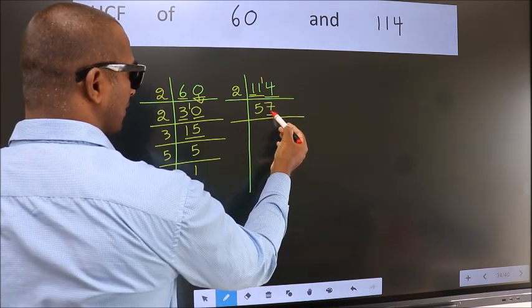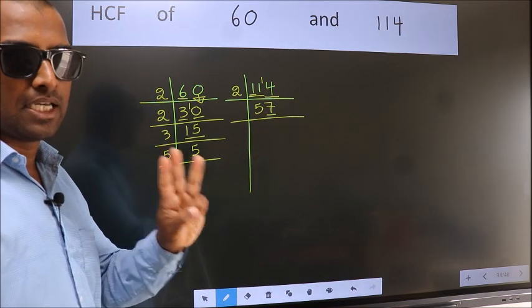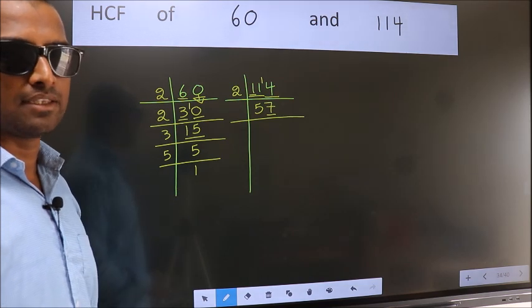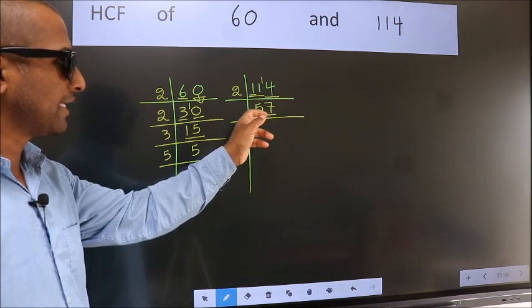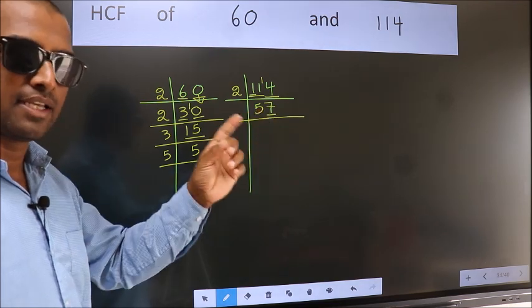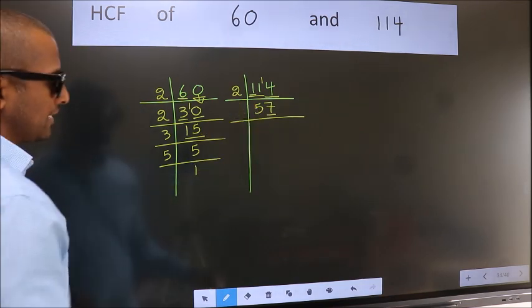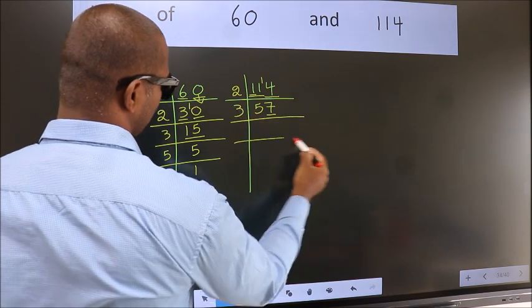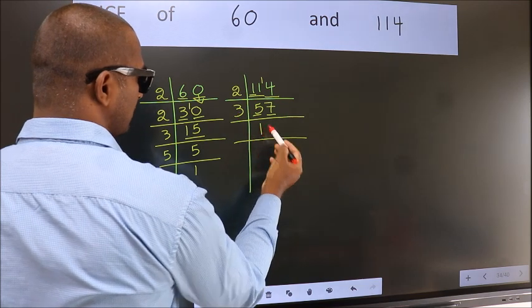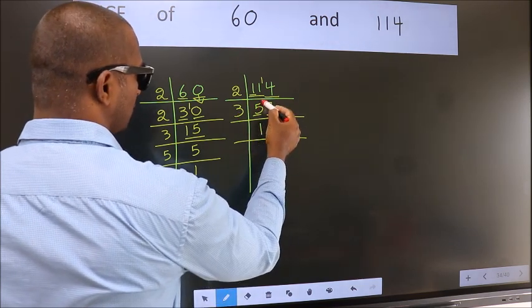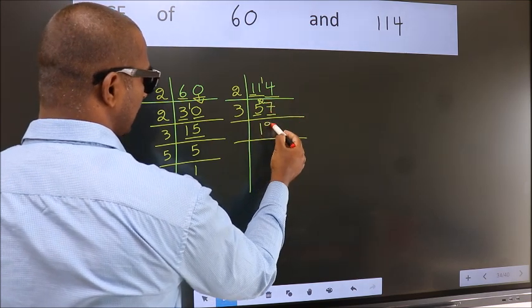Now last digit 7, not even, so this number is not divisible by 2. Next prime number, 3. To check divisibility by 3, for that we should add the digits. 5 plus 7, we get 12. Is 12 divisible by 3? Yes. So this number also divisible by 3. So take 3. First number 5, a number close to 5 in 3 table is 3, 1, 3. 5 minus 3, 2. 2 carried forward 27. When do we get 27 in 3 table? 3, 9, 27.